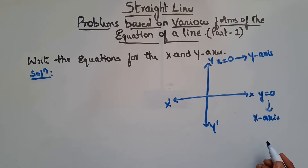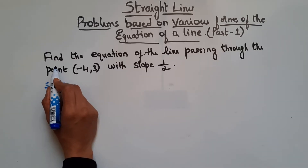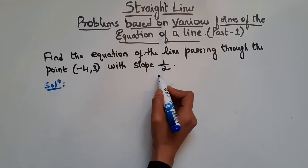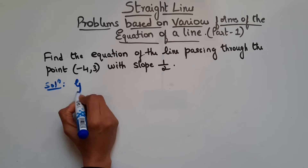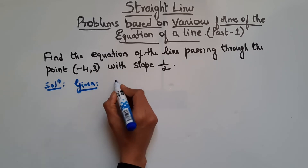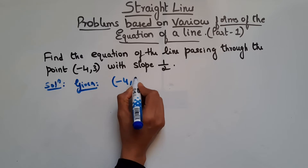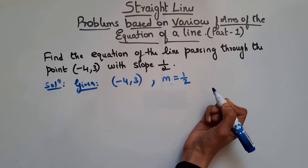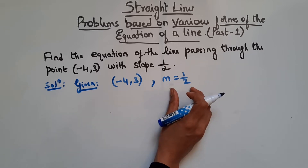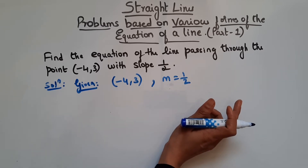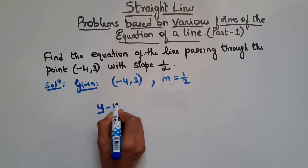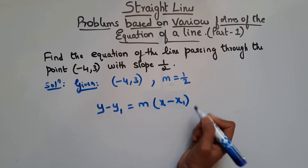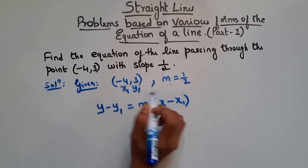So let's move on to the next question. Here it says, find the equation of a line passing through the point (-4, 3) with slope 1/2. So we have a point that is (-4, 3) and a slope m = 1/2. So when point and slope is given, we can go for point-slope form. In point-slope form, the formula is y - y1 = m(x - x1).